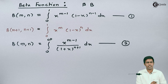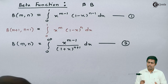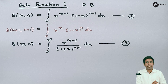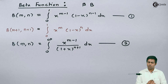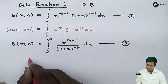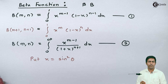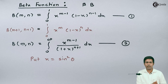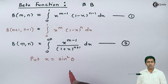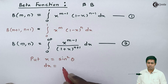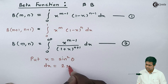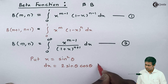We can find a second form of the beta function by making a particular substitution in the first equation. This second form is given in terms of trigonometric functions. If we put x equal to sin squared theta in the first definition, we can get the second form. So if x equals sin squared theta, then dx equals 2 sin theta cos theta dθ.